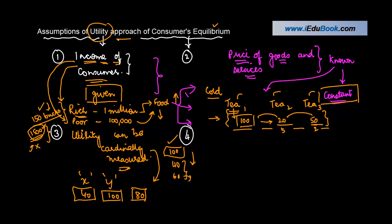And the last one, the fourth one, is that the money has constant marginal utility. Now what does this mean? Again, what it means is that the value of this money should remain unchanged.